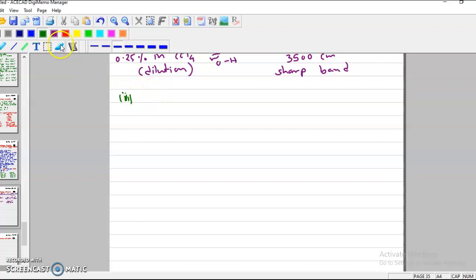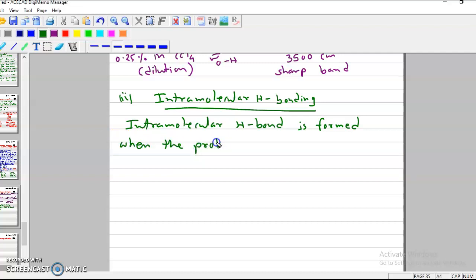Next is intramolecular hydrogen bonding. Intramolecular hydrogen bonding is formed when the proton donor and acceptor are present in a single molecule.